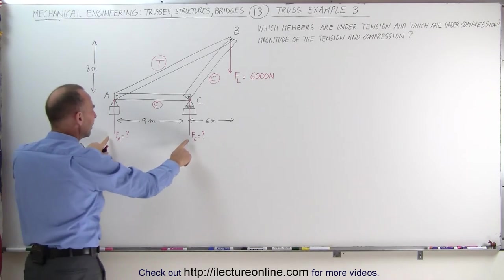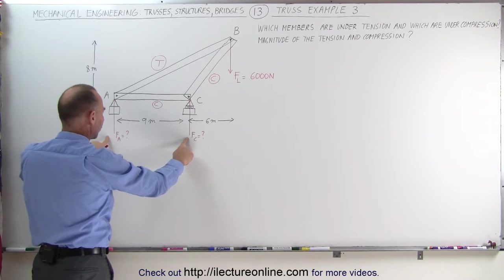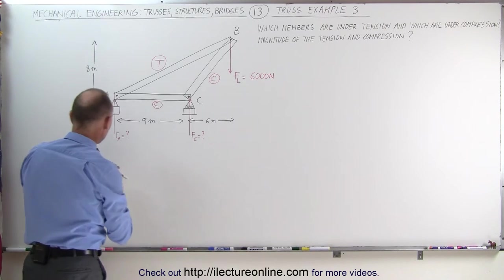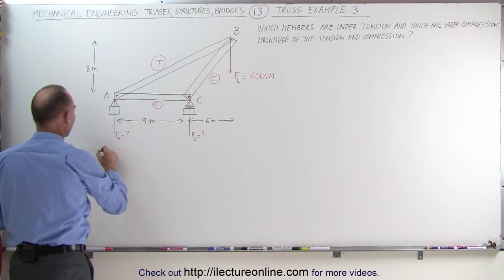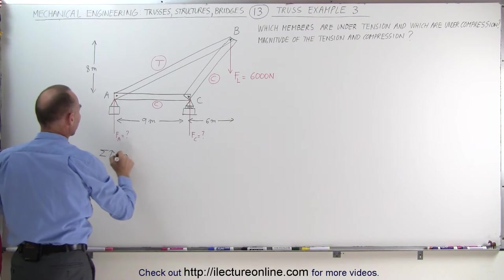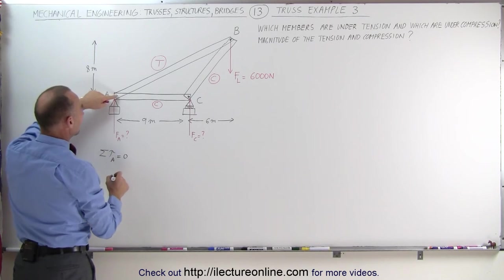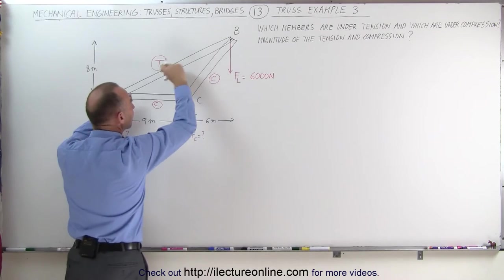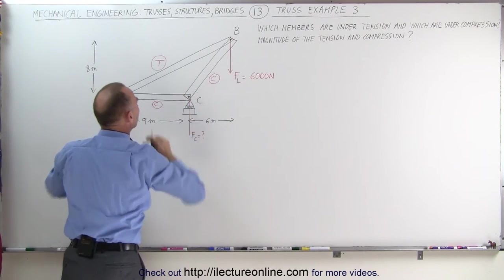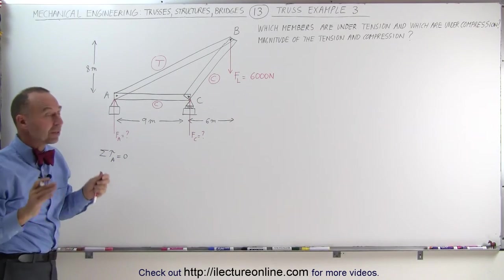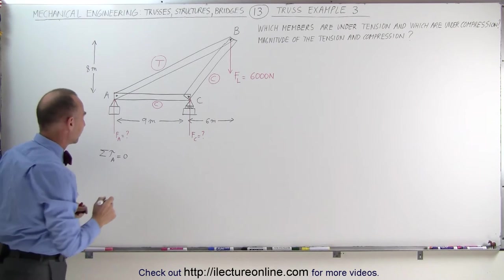Next we're going to find the support forces. What we can do is say that the sum of all the torques about point A equals zero. We'll use this as a pivot point first. We have two forces acting on the overall structure. Remember that a truss can be considered to be a solid structure.